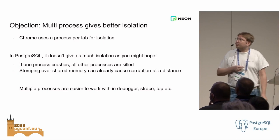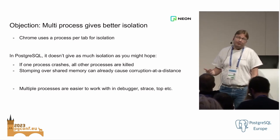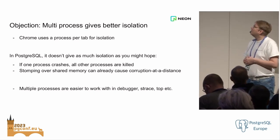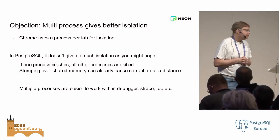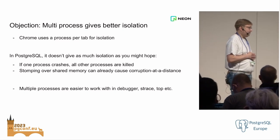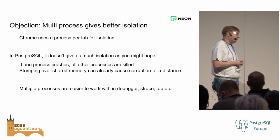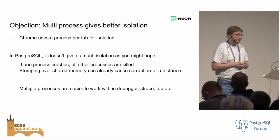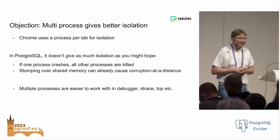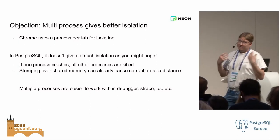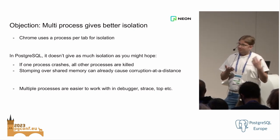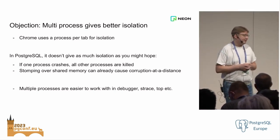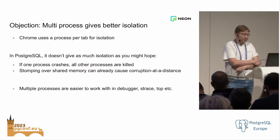There is the argument that multiple processes can be easier to work with — you can attach a debugger to a single process, or run perf to do profiling, or use strace, top, and a lot of tools that work with processes. I think that's also just a switching pain. A lot of those tools can also work with threads. People run debuggers on multi-threaded programs all the time — it's not anything new, and it can be even better in many ways. You can stop all of the threads in a process easily, which you can't do easily when you have to attach a debugger to multiple processes. That's something developers will have to get used to if we make this change.